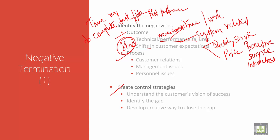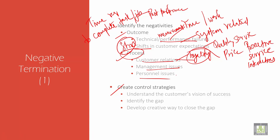Then process — it talks about customer relations management issues and personal issues. Management issues mainly cover customer relations: how you develop the loyalty of a customer, because when a customer wants to buy a product he'll come back to you when you have a good reputation, very good after-sales service, warranty and guarantee, and good feedback. All these help in building up good customer relationships.